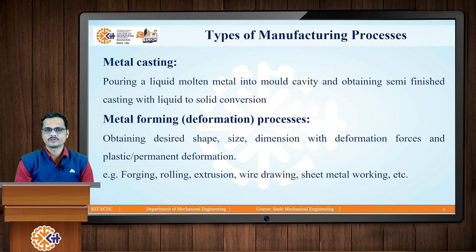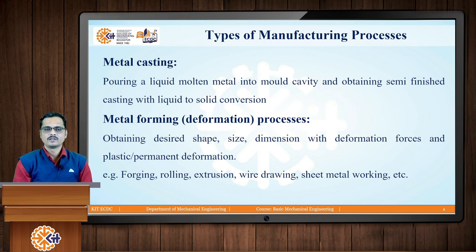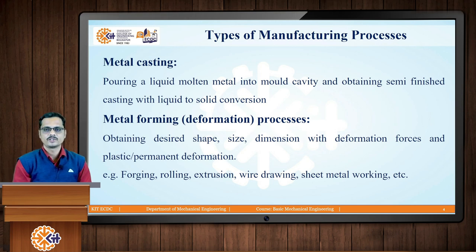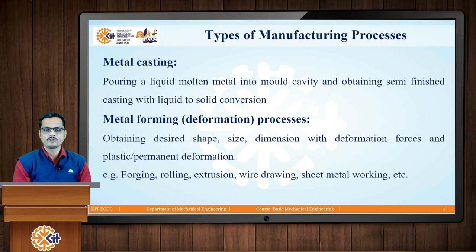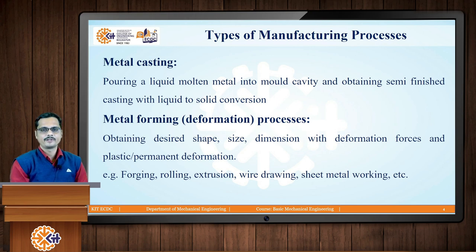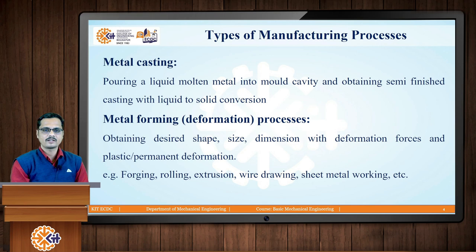The next type is metal forming, also called deformation processes. The basic principle is obtaining or giving the desired shape, size, and dimensions to a given piece of raw material with the help of deformation forces — such as compressive forces, tensile forces, shear forces, or a combination of these — to achieve permanent or plastic deformation. Examples of metal forming processes are forging, rolling, extrusion, wire drawing, and sheet metal working.